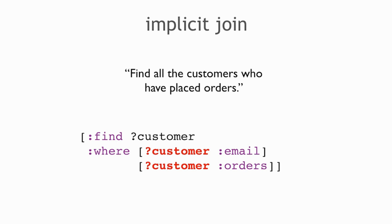To make a join in Datomic, all you have to do is mention the same variable name twice. If two data patterns both mention the same variable name, you get a join. This is beautiful because it's extremely easy to reason about compared to SQL, where you have to name relations. Why don't we have to name relations here? Because in Datomic there's only one relation — one relation of five tuples — whereas in SQL there are as many relations as there are tables.